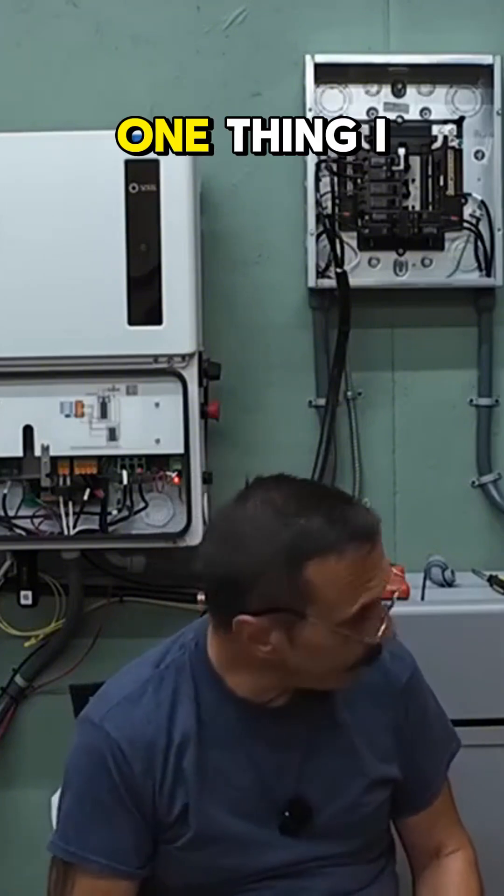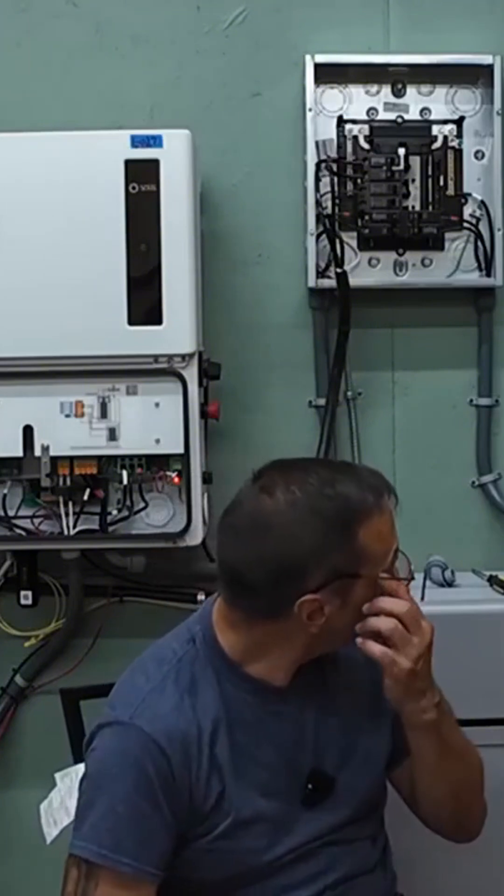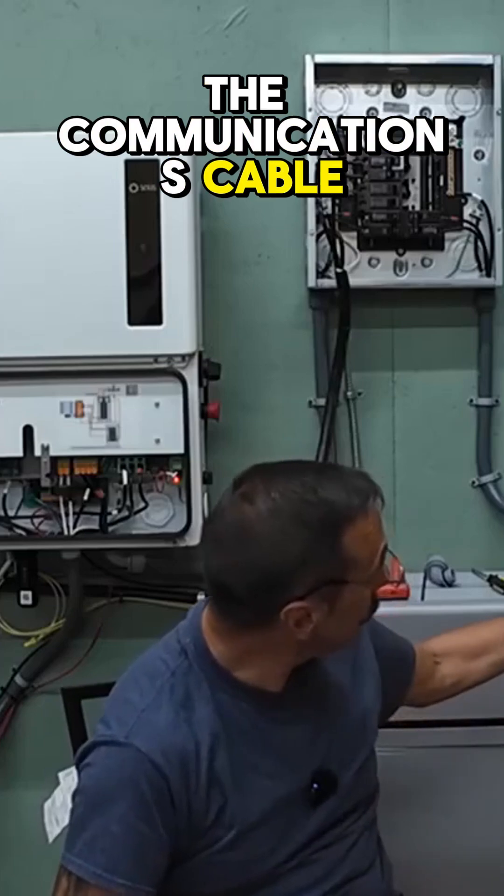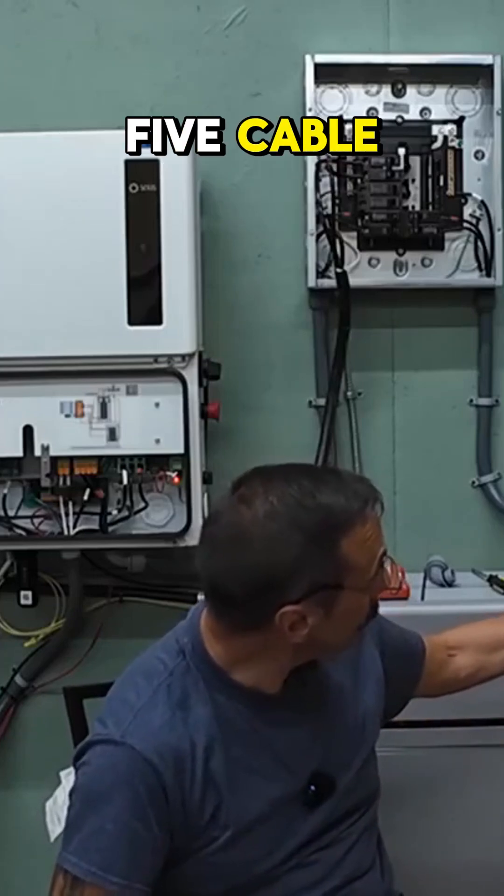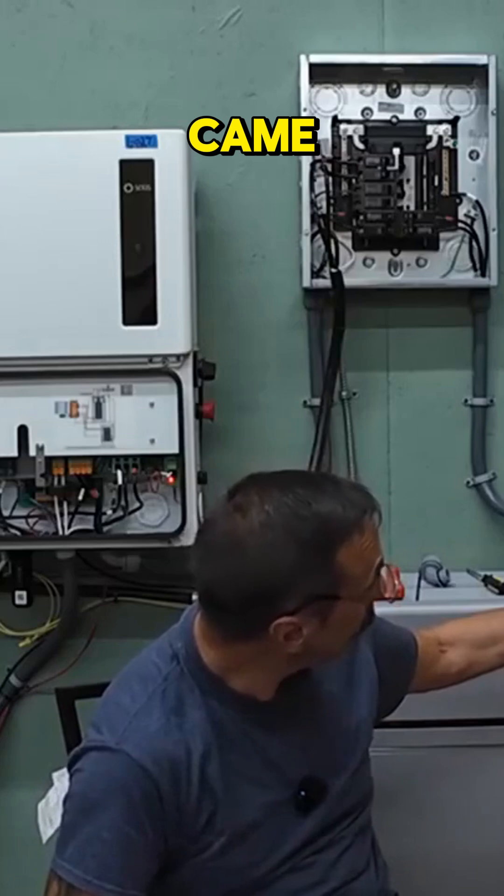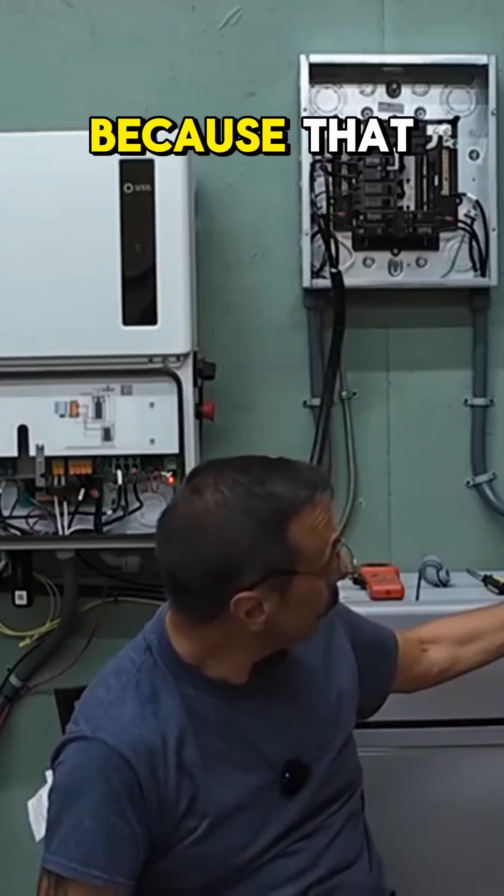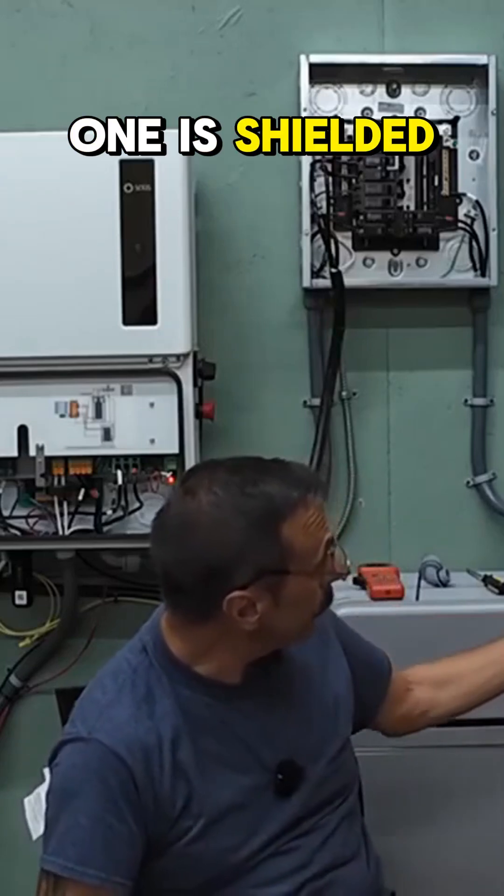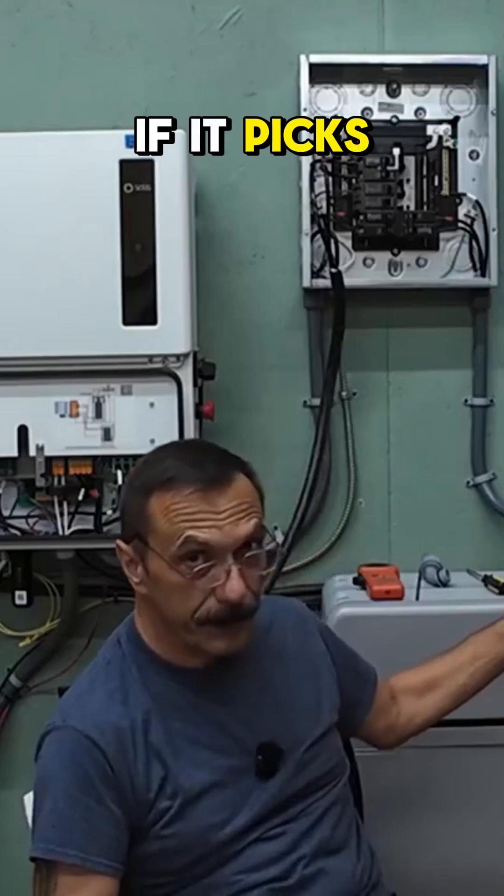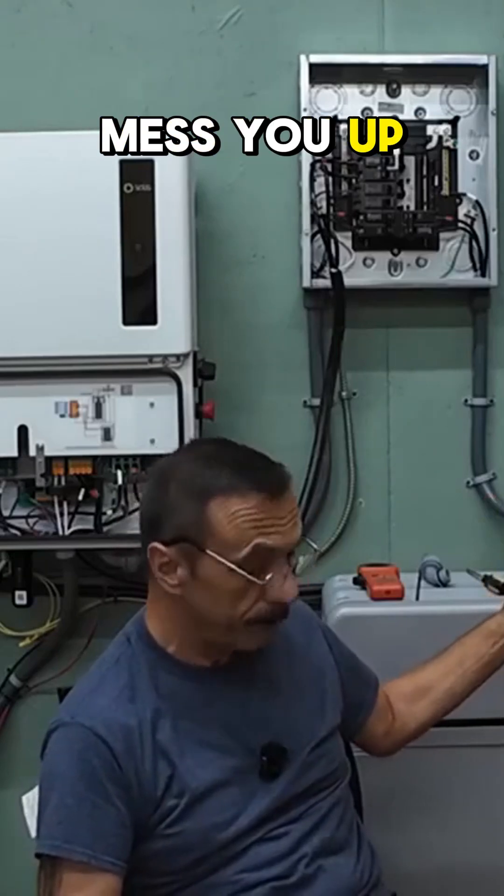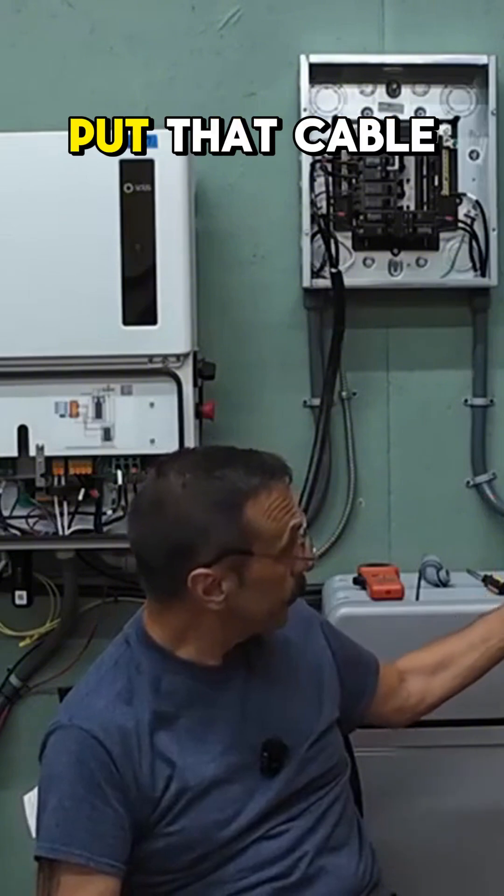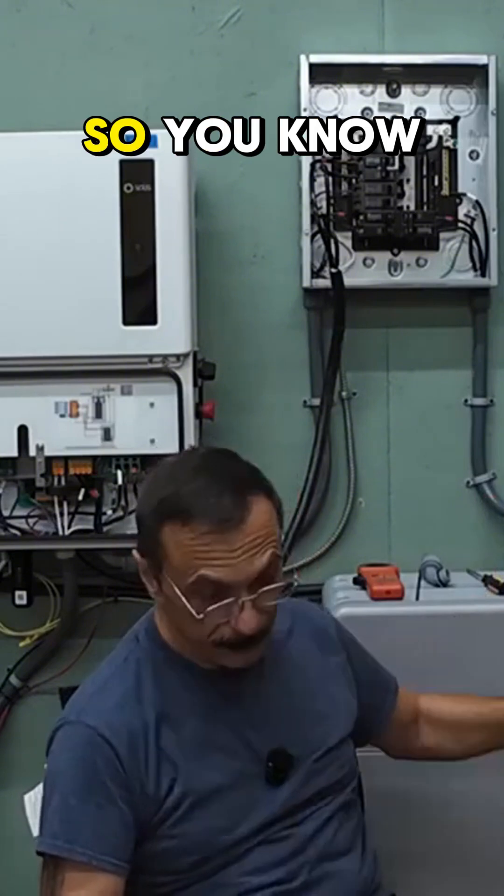One thing I want to say about the communications cable, the RJ45 cable, you want to use the one that came with the inverters because that one is shielded. CAN communications, if it picks up any noise, can really mess you up. When you first get the inverter, put that cable in a safe spot so you know where it is.